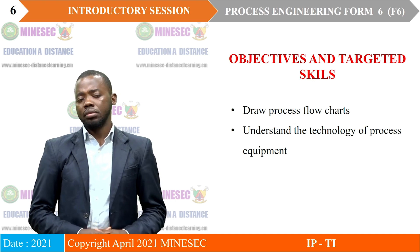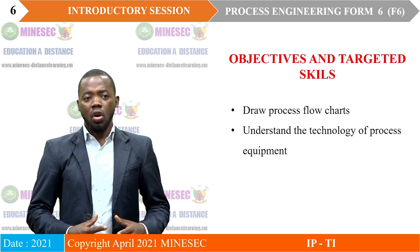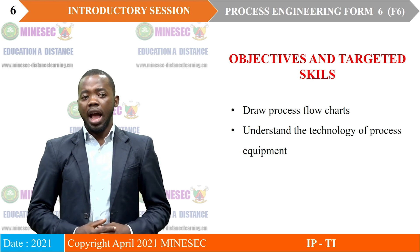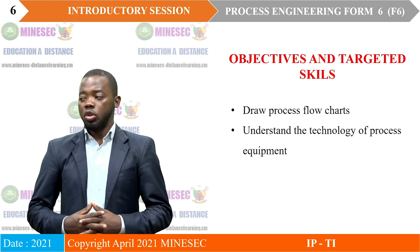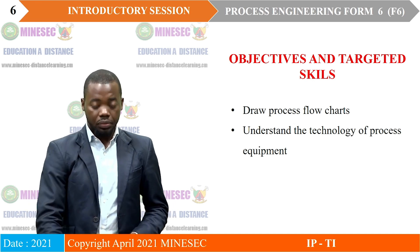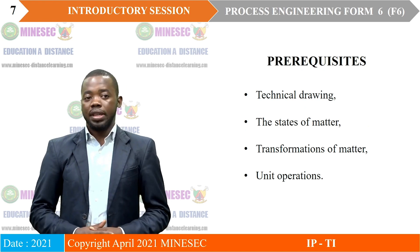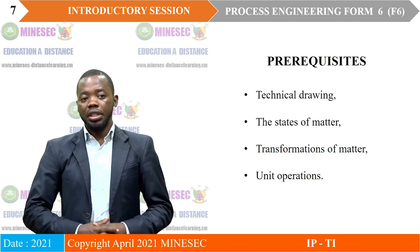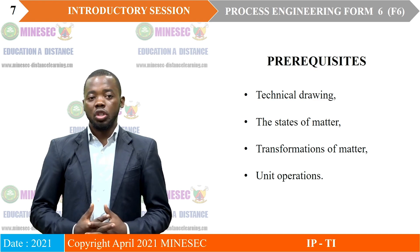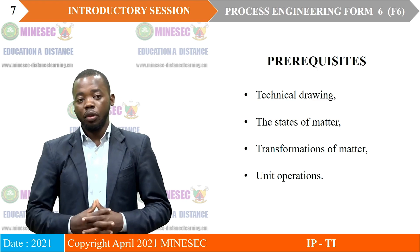Generally, at the end of all the lessons, you should be able to draw process flow diagrams and to understand the technology of processes used in the chemical industry. As a prerequisite, for a better understanding of this course, you will need notions on technical drawing, the state of matter, the transmission of matter, and the notion of unit operations that you studied in Form 5.